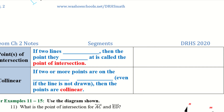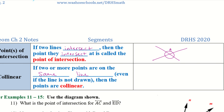Points of intersection: if two lines intersect, the point where they meet is called the point of intersection — I can label that point A. Collinear: if two or more points are on the same line, even if the line is not drawn, then the points are collinear. Points A, B, and C on the same line are all collinear — I could draw a line through each of them.